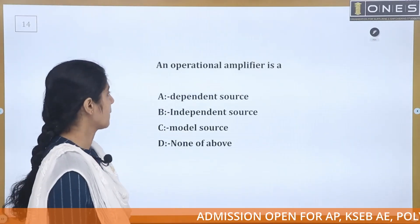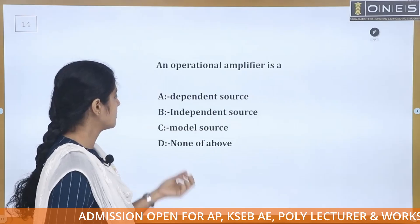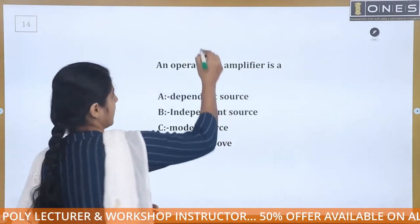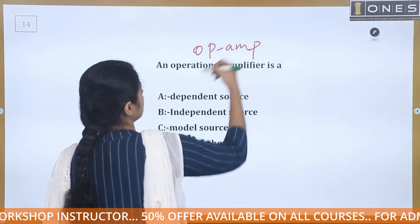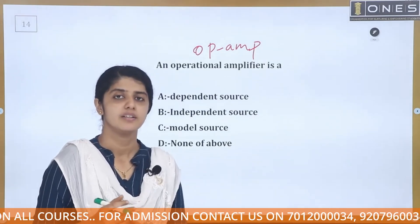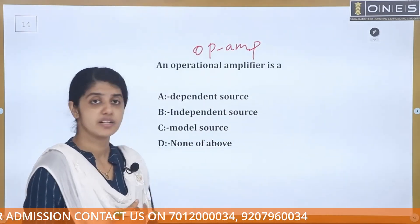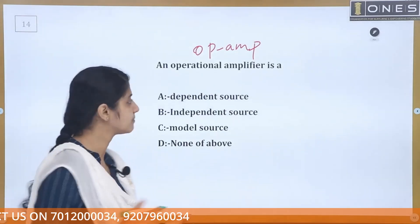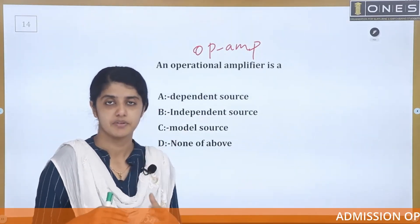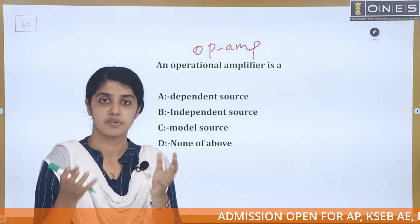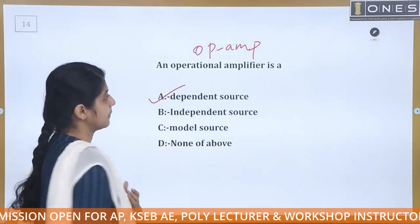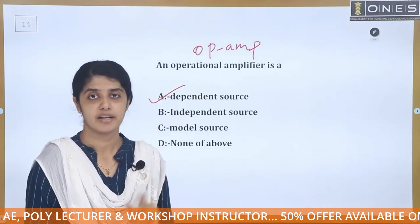An operational amplifier is a dependent source, independent source, model source, or none of the above. The operational amplifier, or op-amp, is a device. Looking at the internal diagram of the operational amplifier, it is a dependent source — specifically a controlled voltage source. Therefore, the operational amplifier is a dependent source.